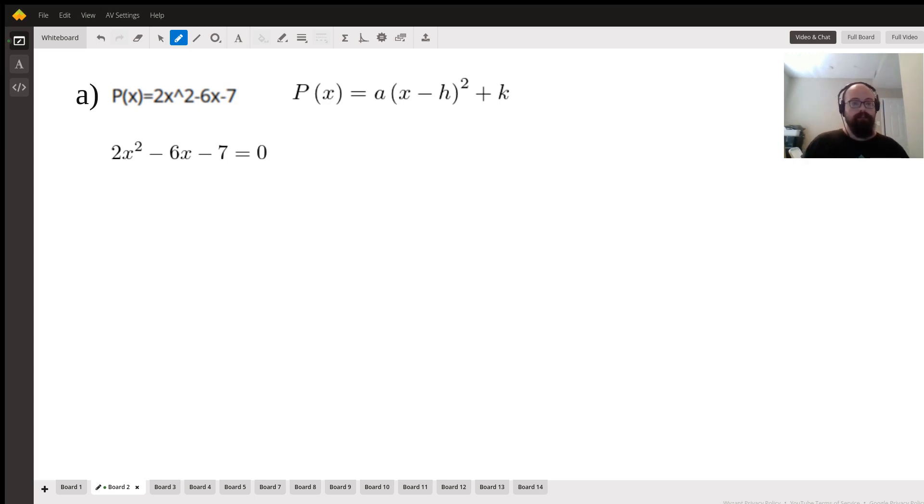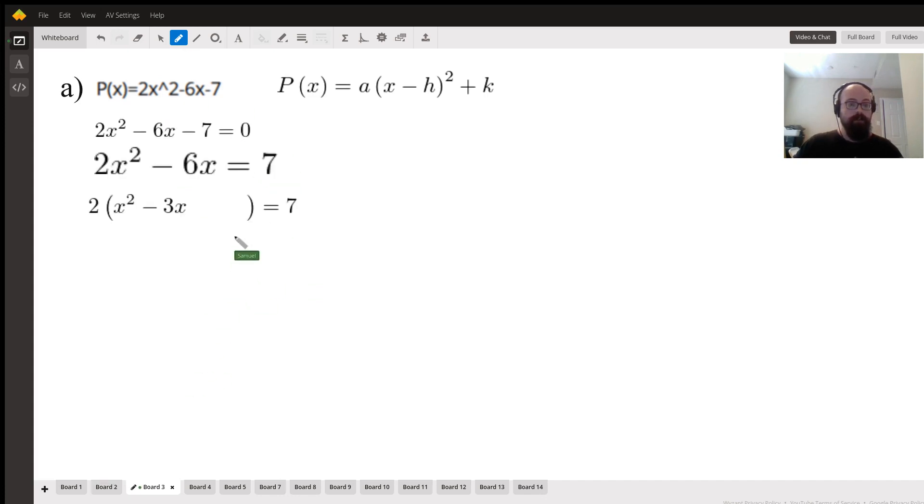So normally what I like to do, just to start, we are going to go about this by completing the square. So the first thing that we're going to do is replace that p(x) with a zero. Once we do that, we'll get all of our terms involving x or x² onto one side and our constant onto the other. What this means is that we're just adding 7 to both sides.